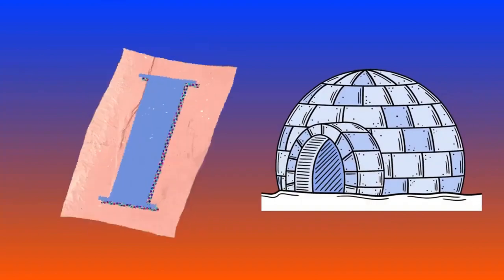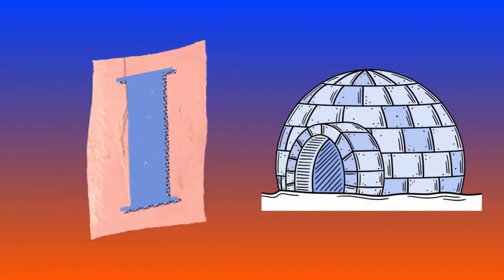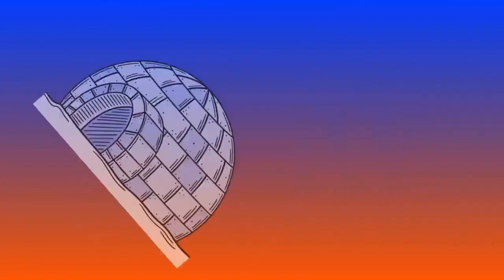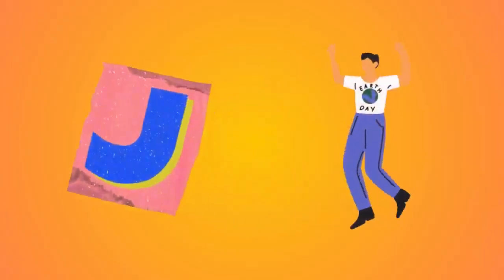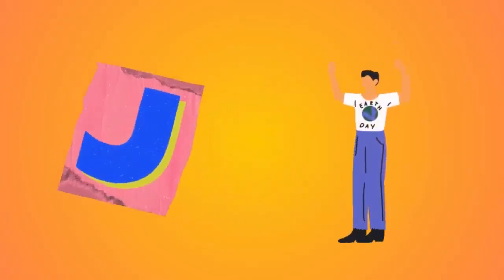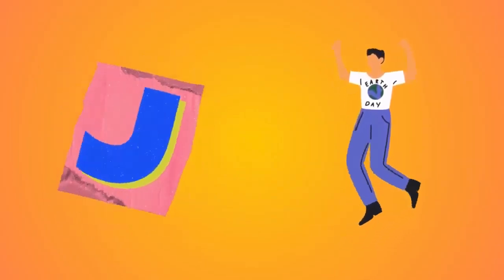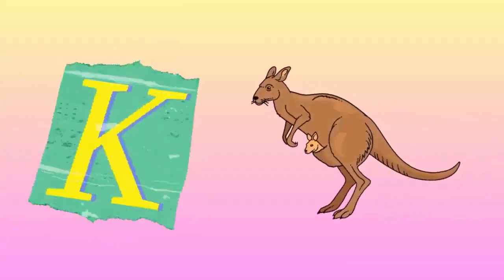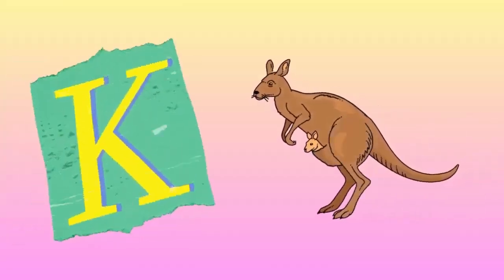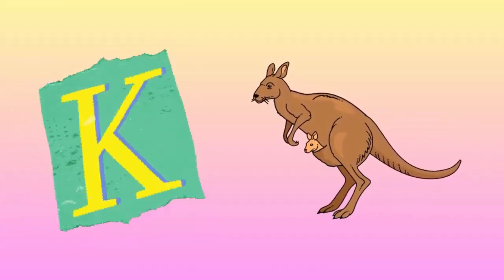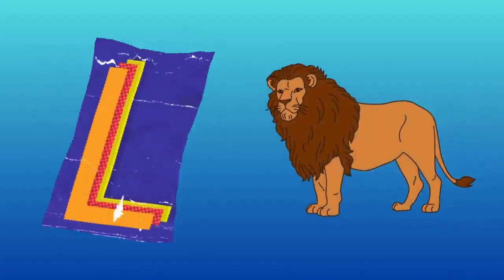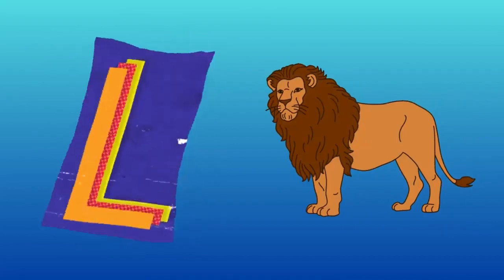I is for igloo, i-i-igloo. J is for jump, j-j-jump. K is for kangaroo, k-k-kangaroo. L is for lion, l-l-lion.